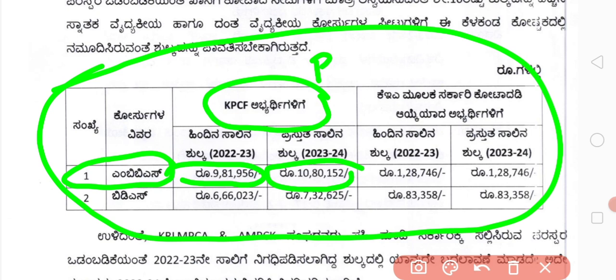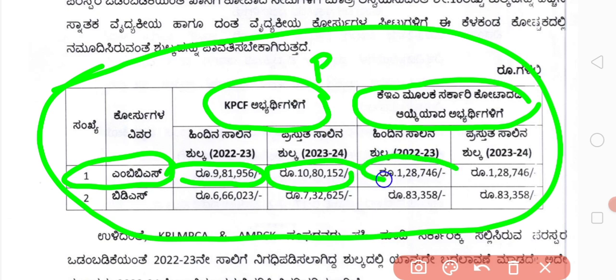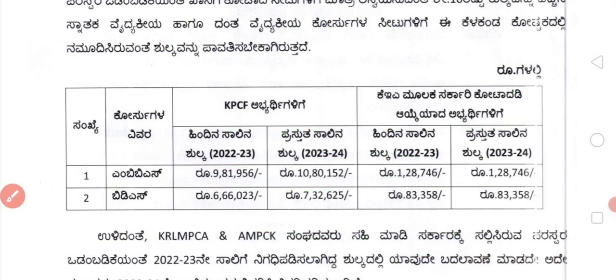And here what they have given is the government seat in a private college. For government seat in a private college, last year it was 1,28,746 — and this year it remains the same for MBBS. So students, remember: only the fees for private seat in a private college have increased. Government seat in a private college remains the same.